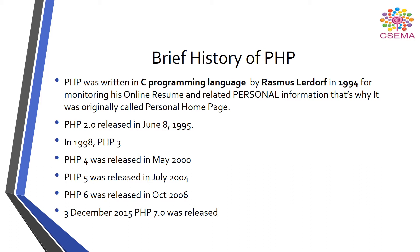Brief history of PHP. PHP development began in 1994 when Rasmus Lerdorf wrote several Common Gateway Interface programs in C programming language, which he used to maintain his personal home pages. These CGI programs were then extended to work with web forms and creating connections with databases. These implementations were called Personal Home Page and Form Interpreter, or PHP/FI.